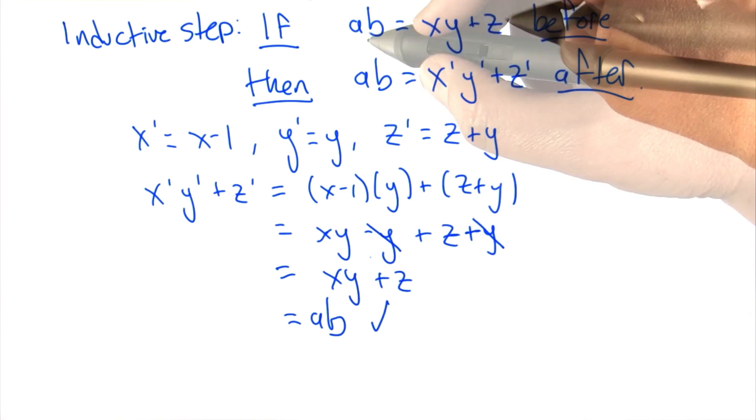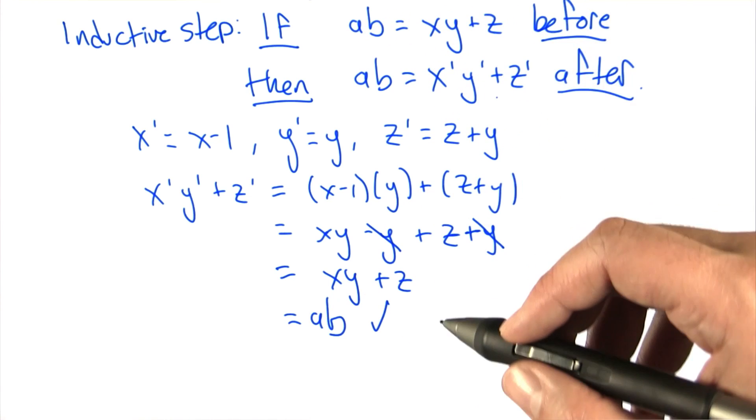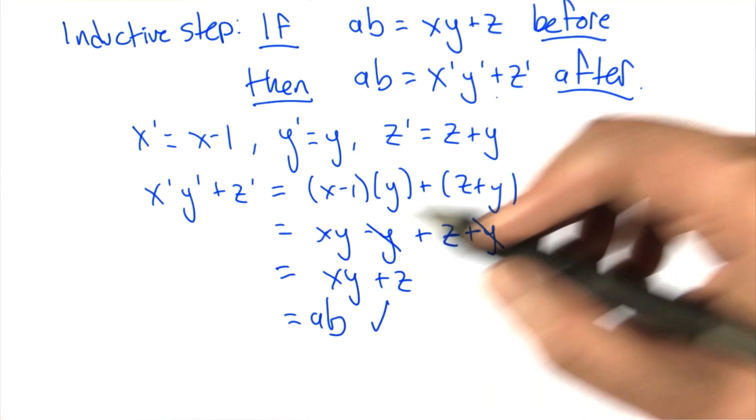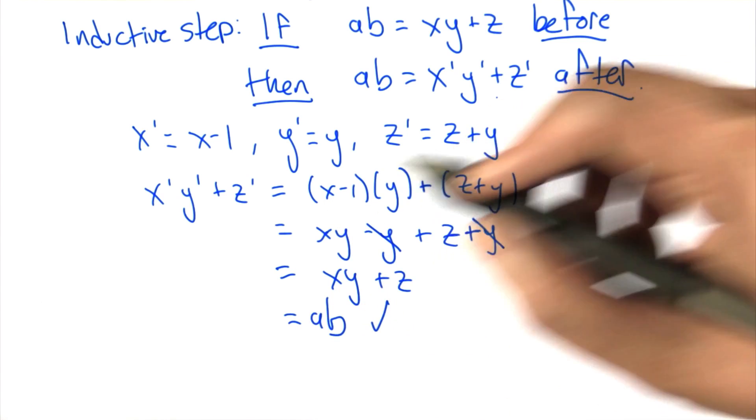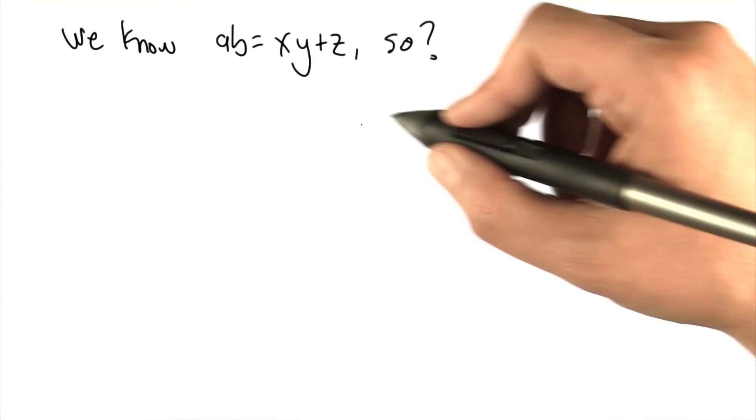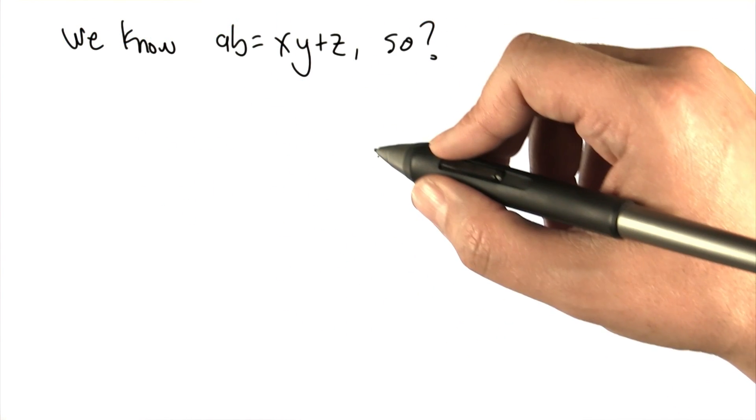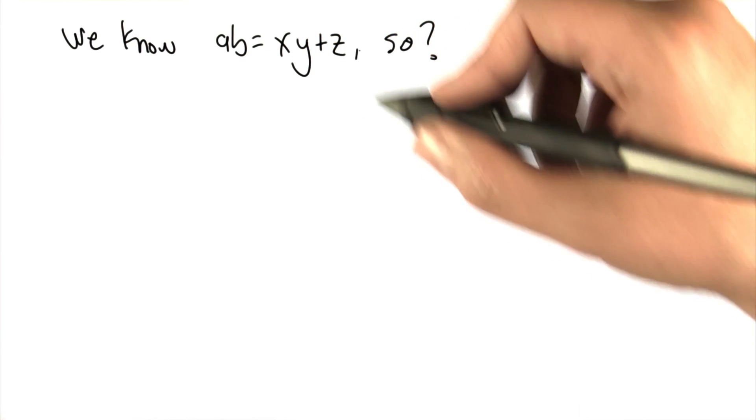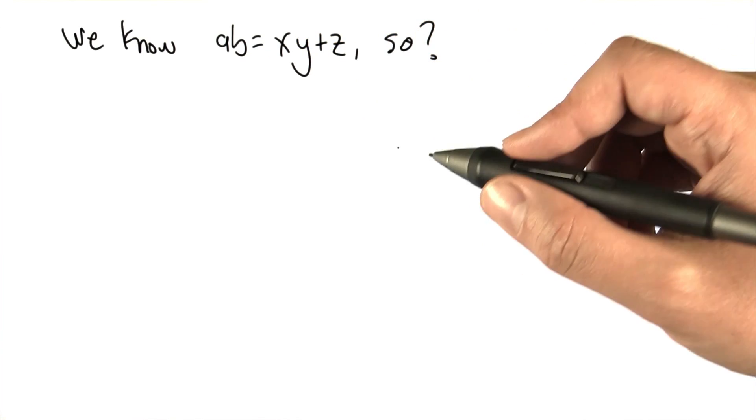So this condition that we're testing here, this AB equals XY plus Z, is maintained through each step of the while loop. It starts out true and it remains true each time it goes through the while loop. So what we know is that while this code is running, each time we go through the while loop, this condition is always true, and eventually the while loop terminates.